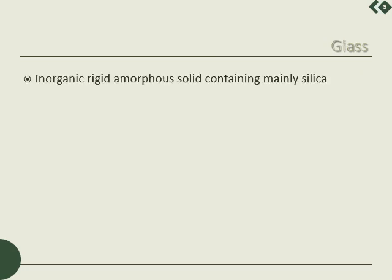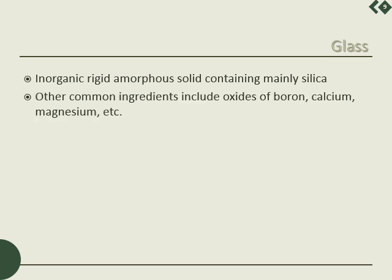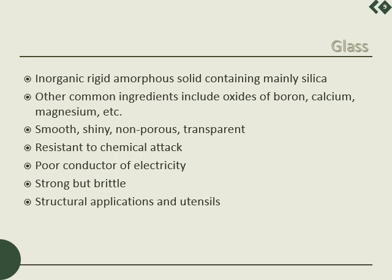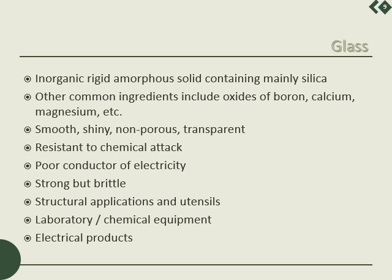Glass is an inorganic, rigid, amorphous solid containing mainly silicon oxide — silicon dioxide or silica, SiO2. Other common ingredients include oxides of boron, calcium, and magnesium. Glass is smooth, shiny, non-porous, and a transparent solid. It is resistant to chemical attack and a poor conductor of electricity. It is strong but generally brittle. It has many structural applications and is used for labwares, chemicalwares, utensils, electrical products, and insulation purposes.